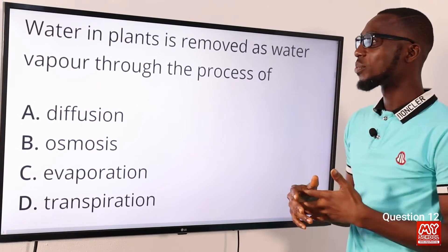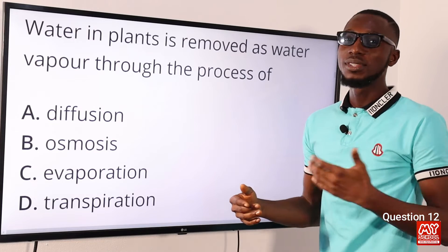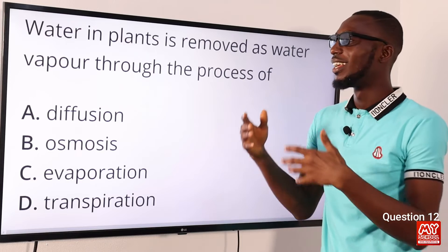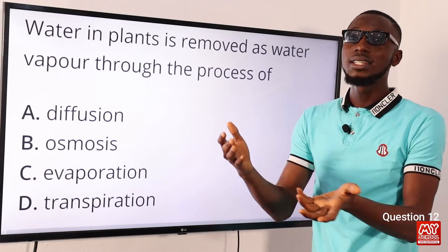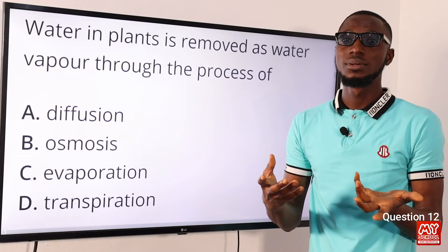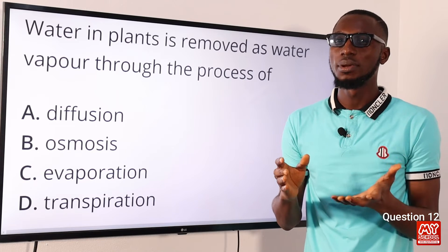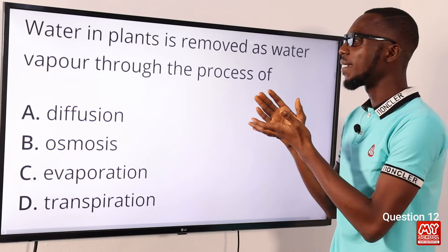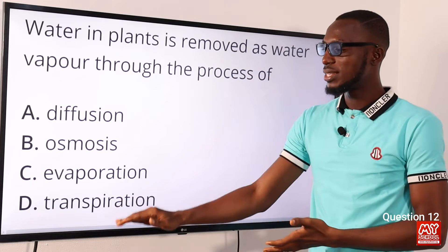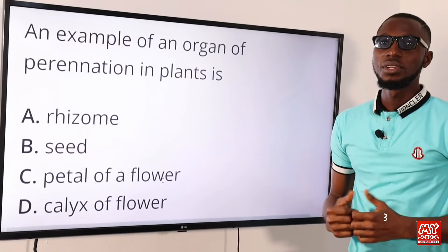Question twelve: water in plants is removed as what, through what process? The opening and closing of stomata controls movement of gases and prevents excessive water loss in the form of water vapor through the process of transpiration. So water in plants is removed as water vapor through transpiration. Option D is your correct option.